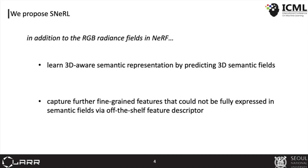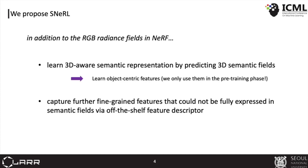In this work, we introduced a simple yet efficient method to address the limitations of prior works. Our proposed method learns 3D-aware semantic representations by predicting semantic fields. Notably, ours only uses them in the pre-training phase and does not require semantic masks in downstream tasks such as learning RL agents.